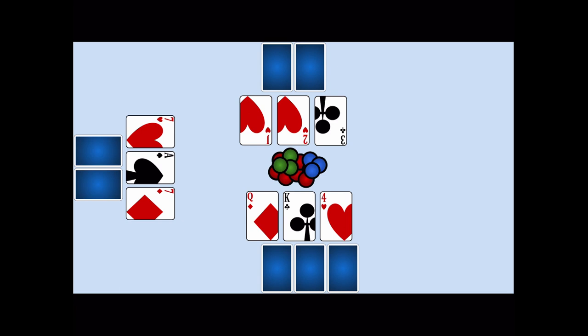After the three rounds of dealing and betting, a final hole card is dealt to each remaining player. And the final round of betting takes place.